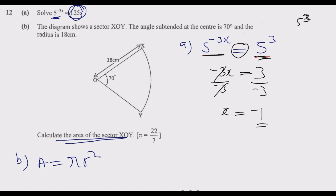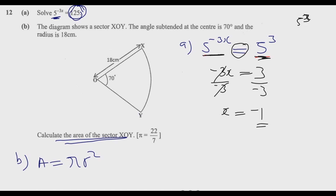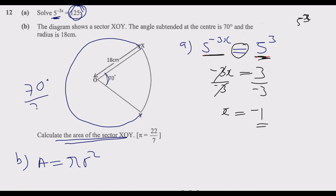If it's a sector, it is part of the entire circle, not the complete circle but a part of it. The complete circle would be a full shape, but because we are not taking the entire part — we are only taking the part that constitutes 70 degrees out of the total 360 degrees of the circle.